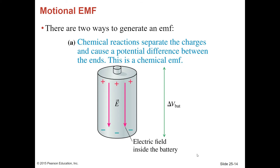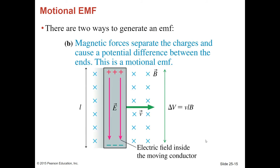There are two ways to generate an EMF. In a battery, chemical reactions separate the charges and cause a potential difference between the ends — this is a chemical EMF. Magnetic forces can also separate charges and cause a potential difference between the ends of a conductor — this is motional EMF. The magnetic force pushes positive charges upward, causing separation of positive and negative charges and developing an electric field inside the moving conductor.